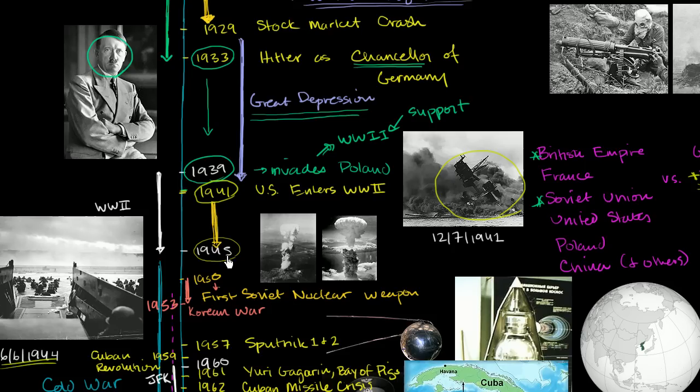Fast forward to 1945. Eventually, especially between all of the Allied forces, they were able to win the European front of World War II. Then toward the end of that year, Japan was still fighting pretty ferociously. The US — and this is something we could debate the ethical implications of — developed the atomic bomb, ignited one over Hiroshima, and then a few days later, one over Nagasaki.